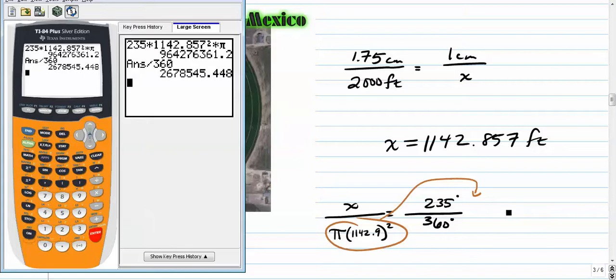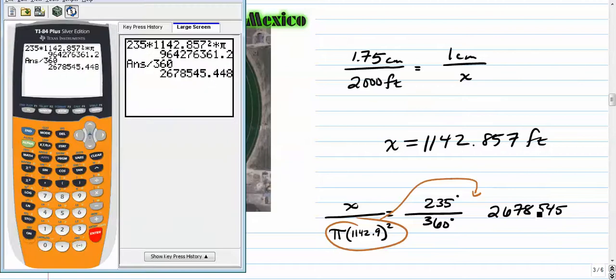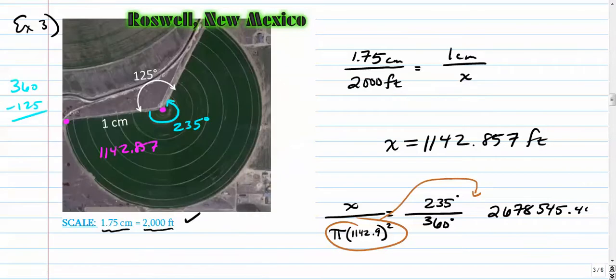It's a big number, about 2.7 million or so. 2,678,545.448. That's how many square feet his farmland is. It's a lot. It's an awful big farmland.